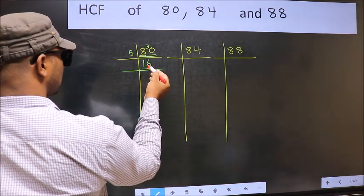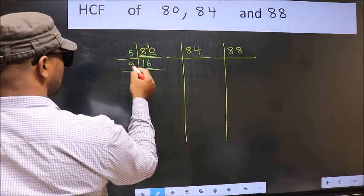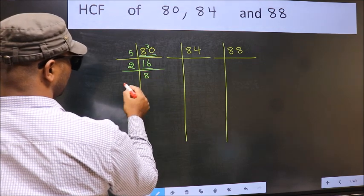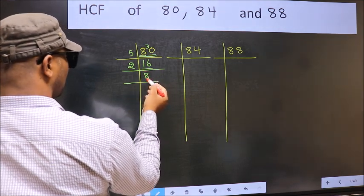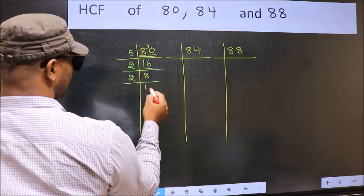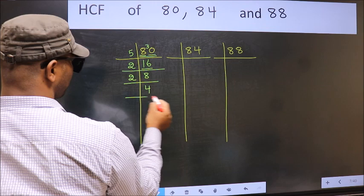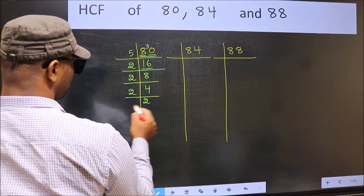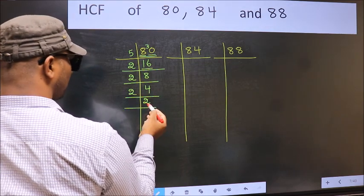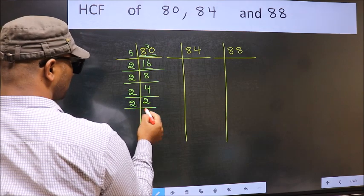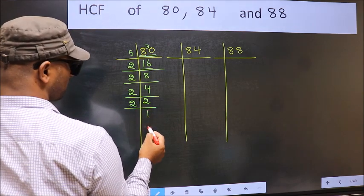Now here we have 16. 16 is 2 eights, 16. Now 8 is 2 fours, 8. Now 4 is 2 twos, 4. Now we have 2 — 2 is a prime number, so 2 ones, 2.